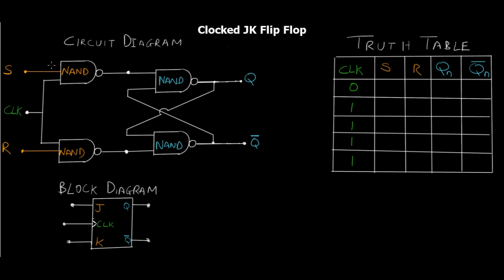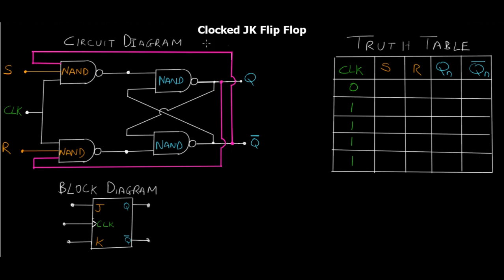As you can see on the screen, I took the output of Q and fed it back to the very first NAND gate where the R input was — and now this has become a JK input. For Q-bar, I've taken that output and passed it to the S NAND gate. So this is basically the JK flip-flop. I can replace S and R and name them J and K. This gives us the advantage to tackle that race condition; otherwise the working of JK flip-flop is exactly the same as SR flip-flop.